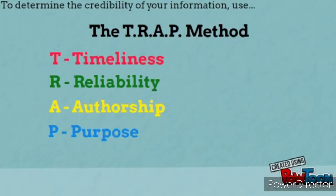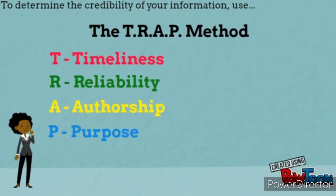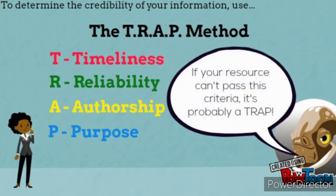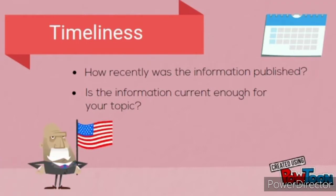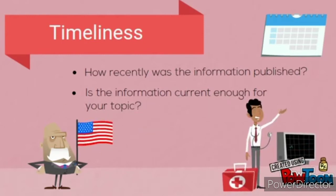Each letter represents a particular way of questioning the information you find in a book, in a newspaper, or on the web. When evaluating timeliness, ask yourself: is this information recent enough to be relevant to my topic? Where an article from 1960 might be relevant about U.S. history, it will not be current enough to talk about current trends in medicine. Make sure that your information is as current as possible.